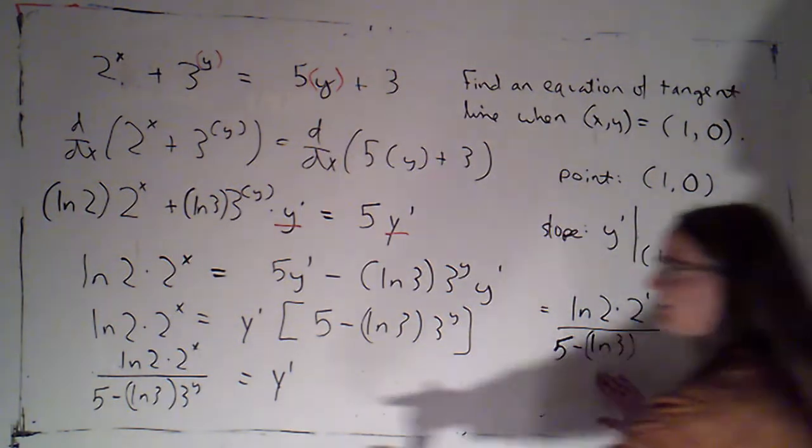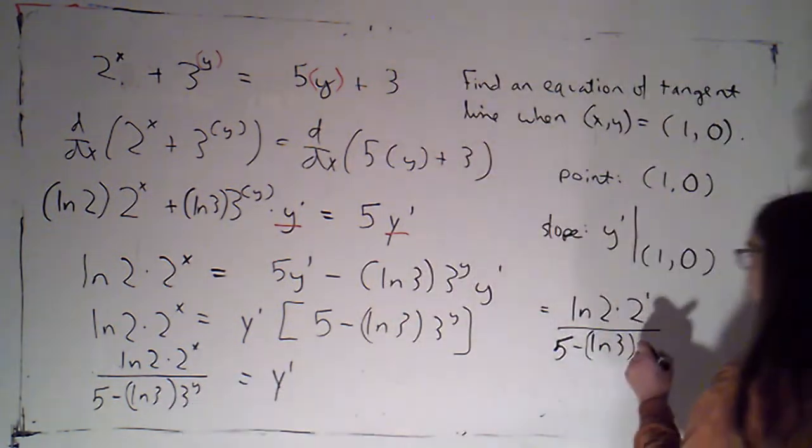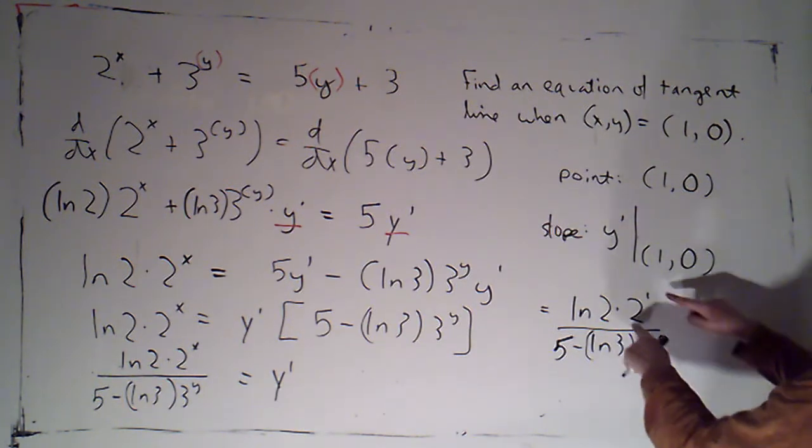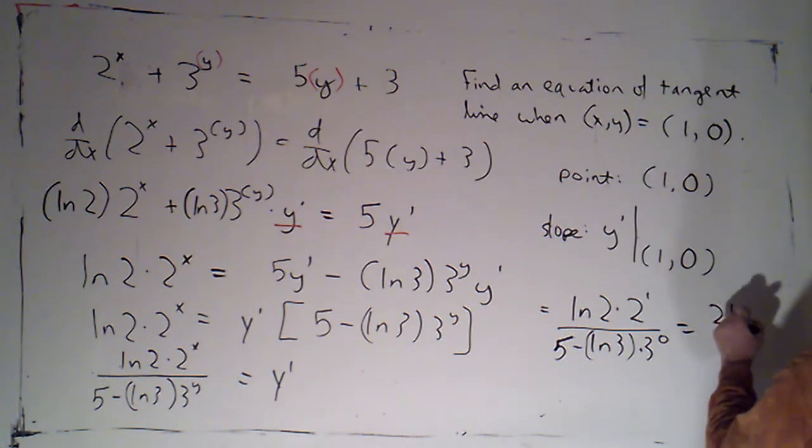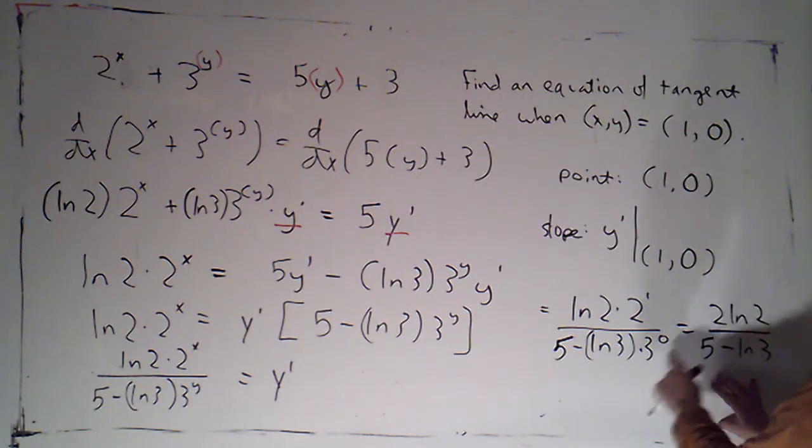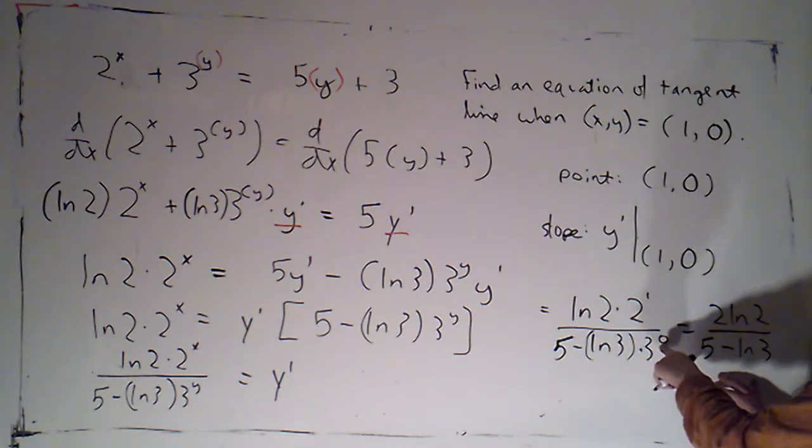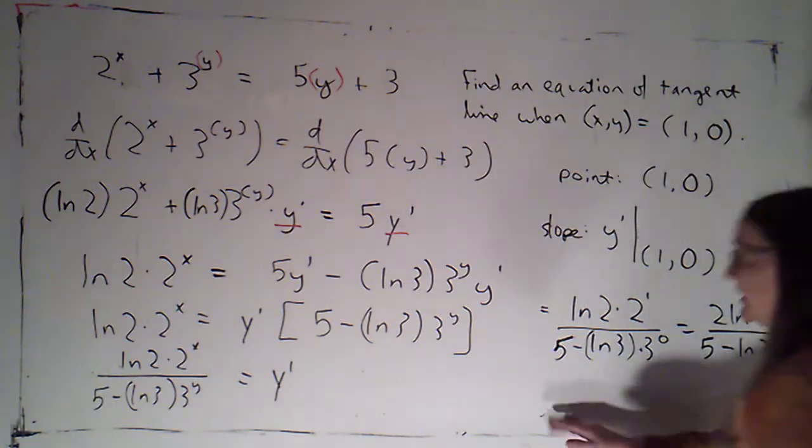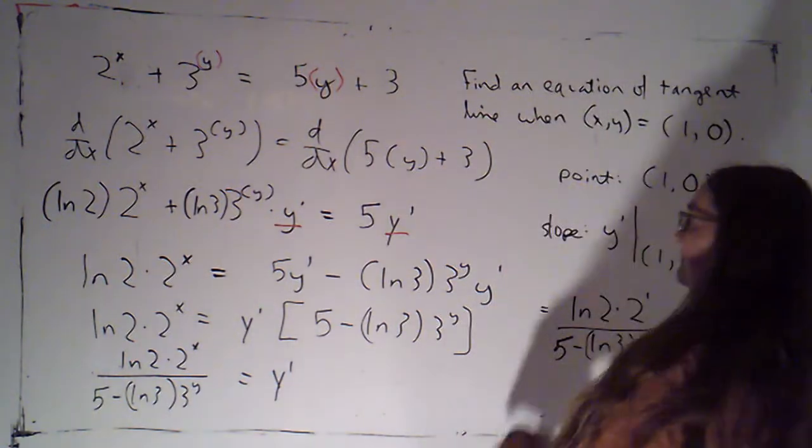Let's see. So 5 minus the natural log of 3 times 3 to the y is going to be 3 to the 0. So let's see. 2 to the first is just 2. So that's 2 natural log of 2 over 5 minus the natural log of 3. Because 3 to the 0 is just 1 times natural log of 3 is natural log of 3. Excellent. So that's my slope.